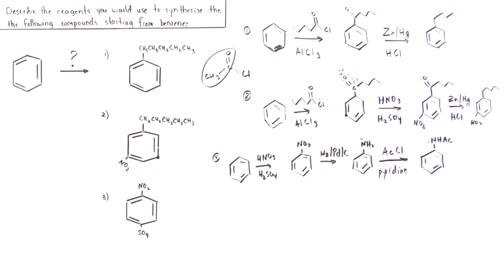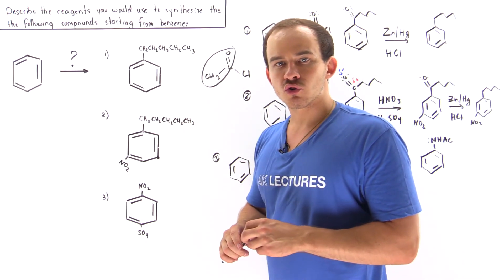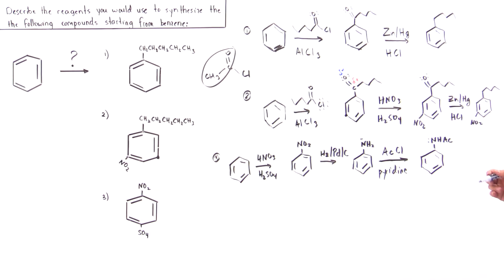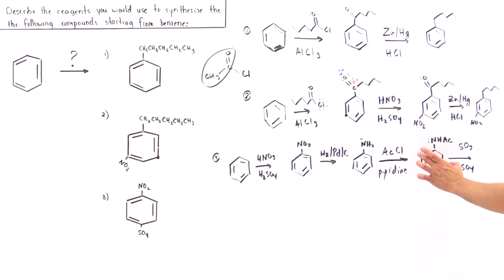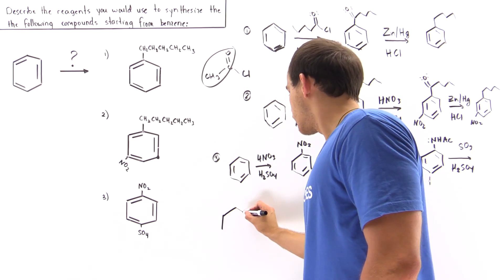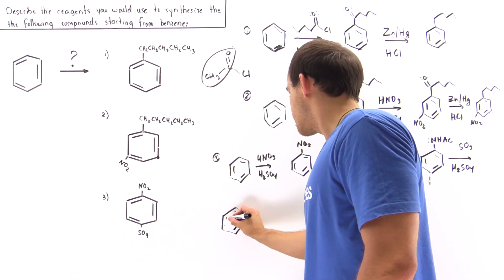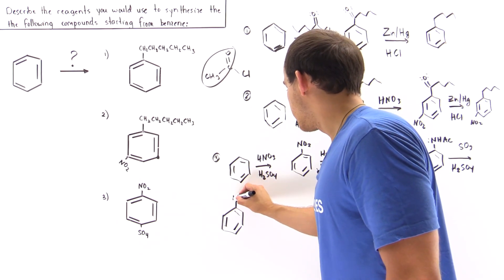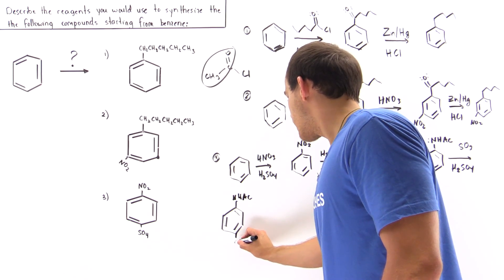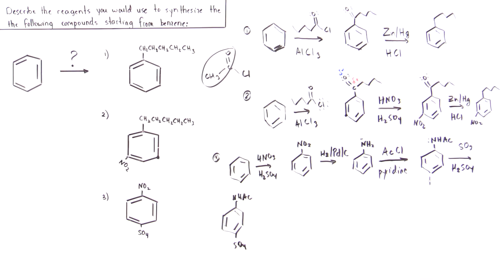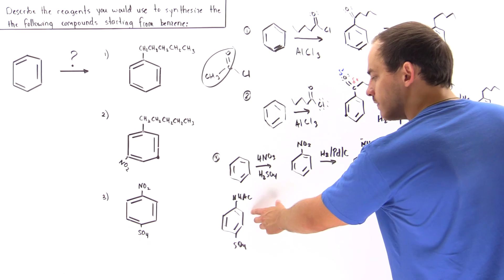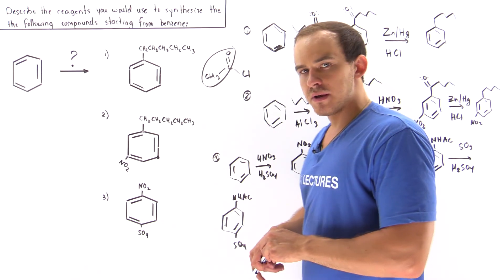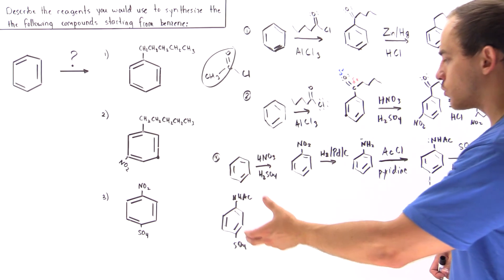This acetamide group is actually more para-directing than ortho, because both the acetamide group and the incoming SO3 group are relatively large — steric hindrance favors the para position. So when we add SO3 in the presence of H2SO4, the sulfonate group ends up at the para position. We may also produce some ortho product, but we can separate ortho from para using a special technique.